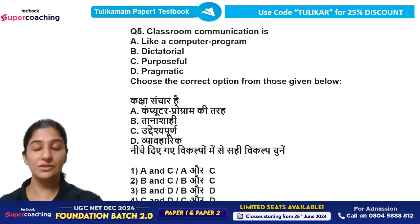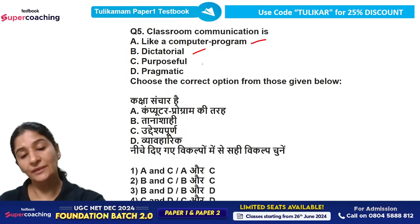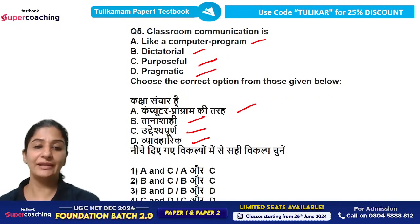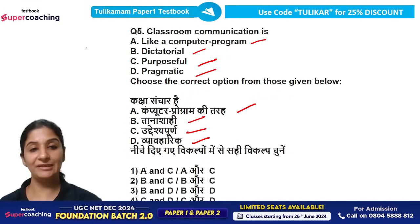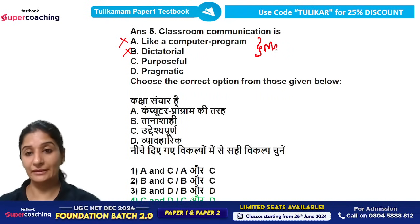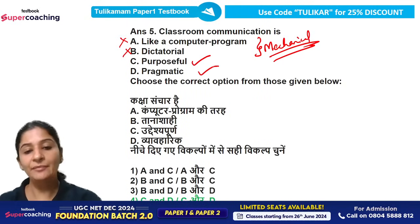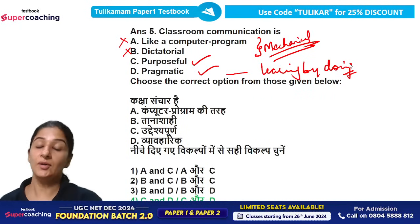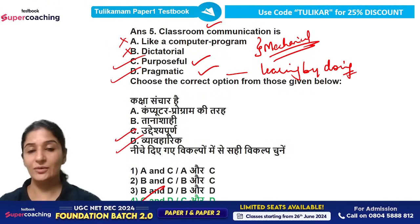Question 5: Classroom communication is — (A) like a computer program, (B) dictatorial, (C) purposeful, (D) pragmatic. You can use the elimination technique here since you need to select two options. The process of learning by doing greatly influences classroom communication. So C and D — purposeful and pragmatic — will be the right answer for Question 5.